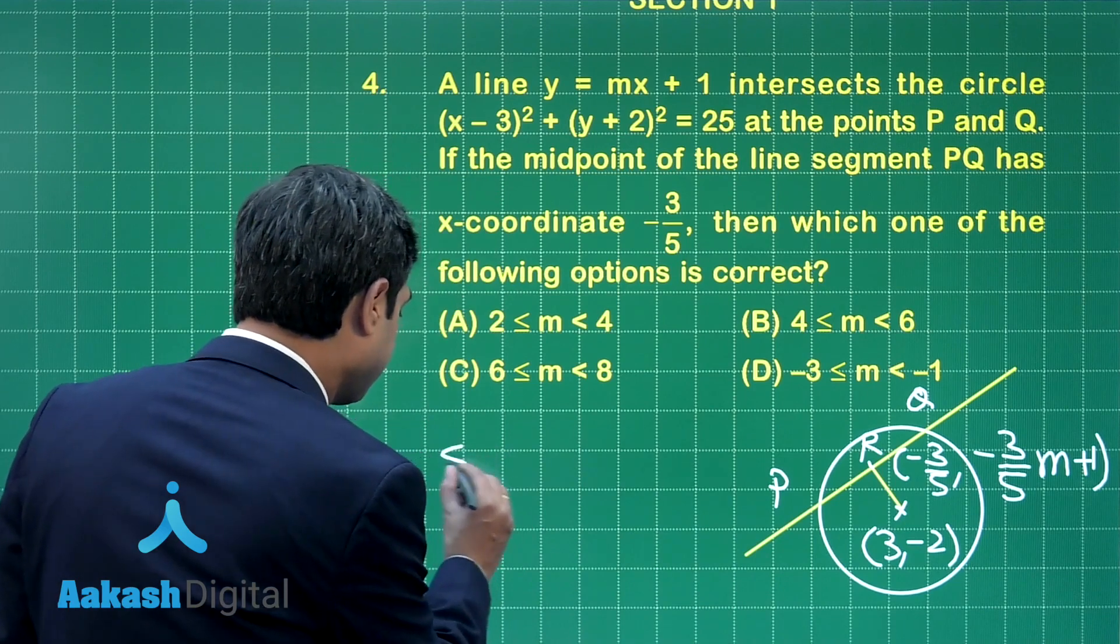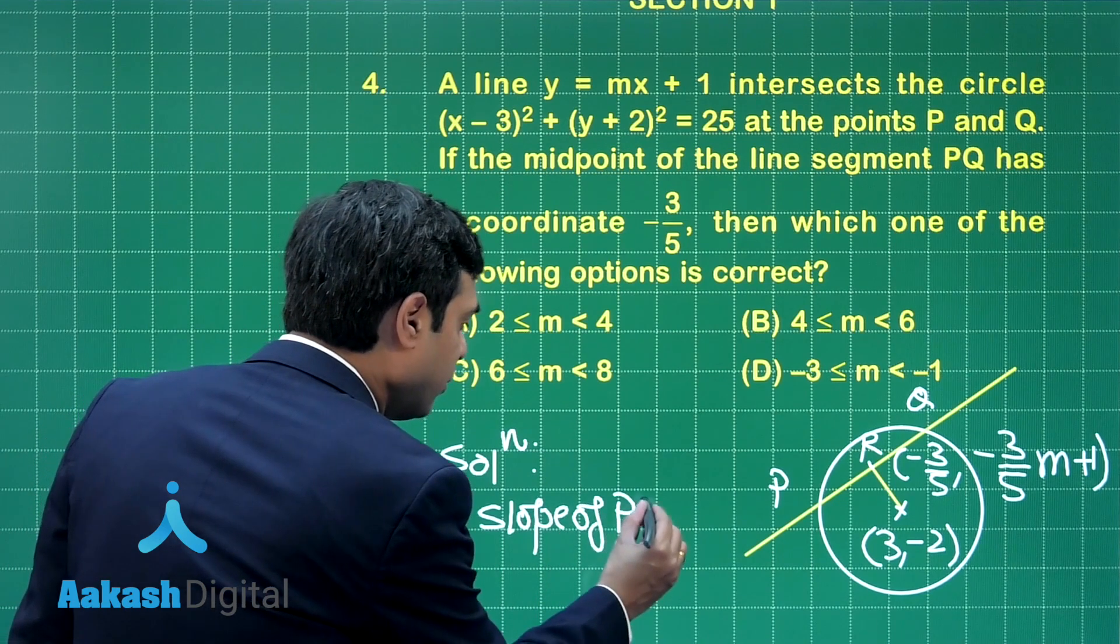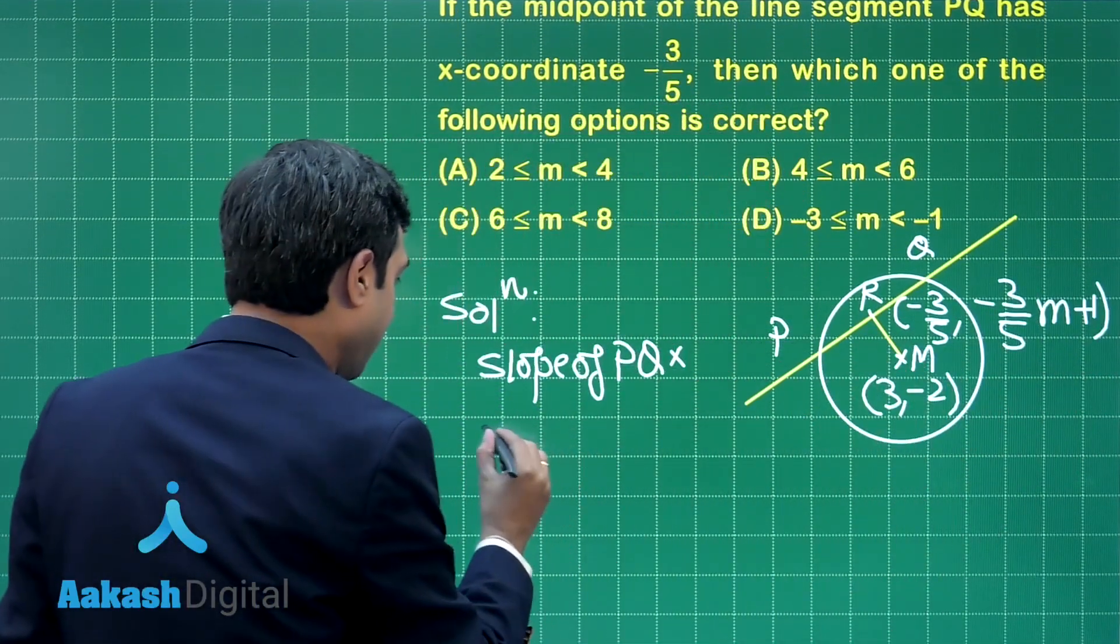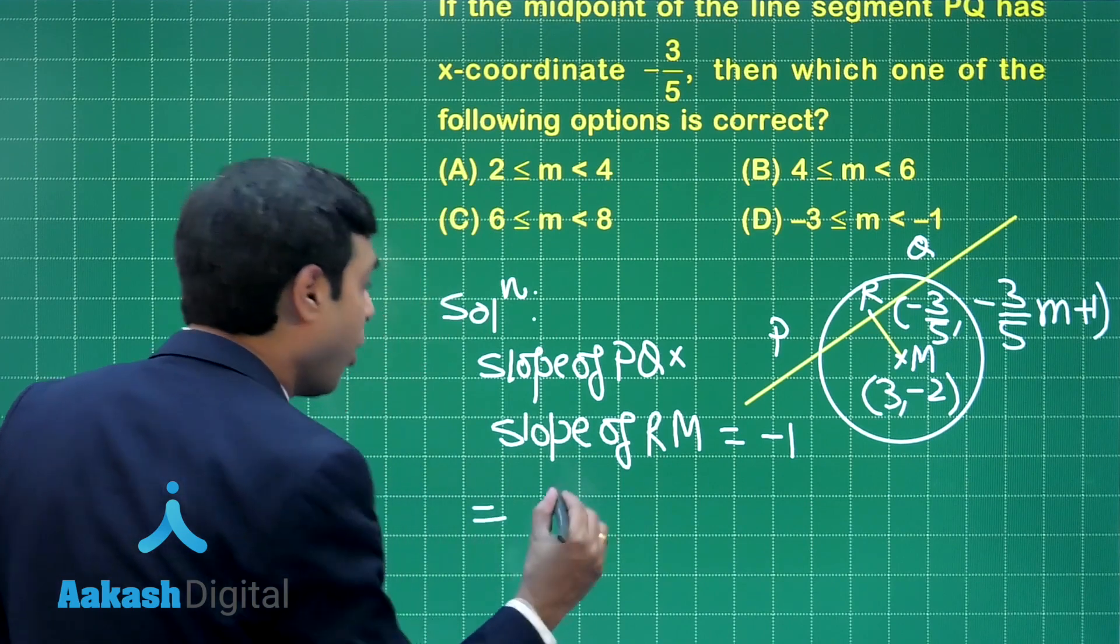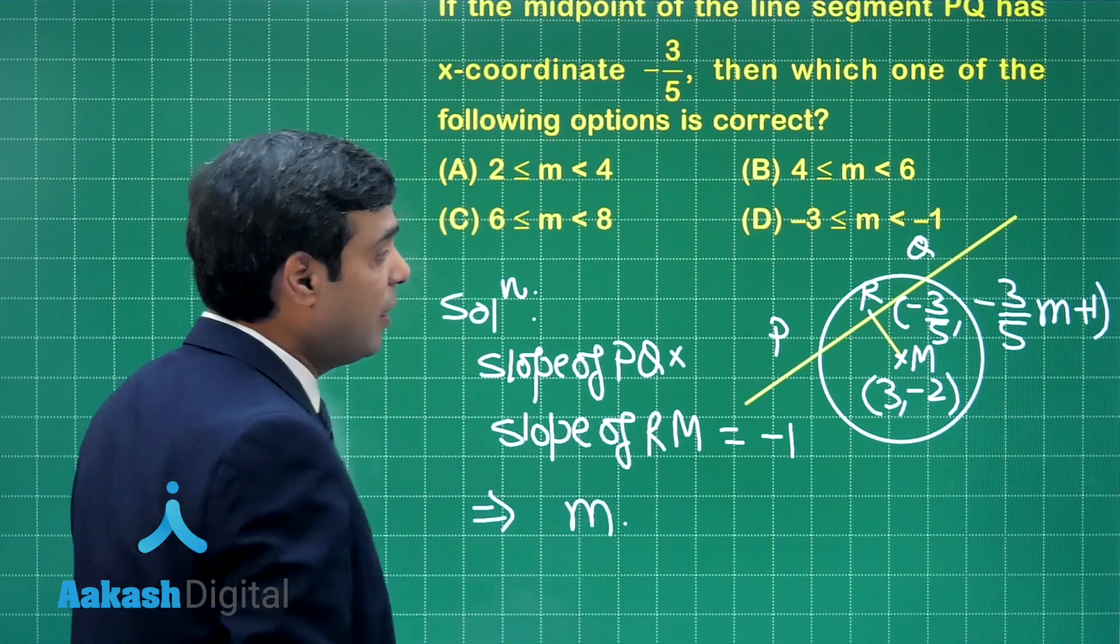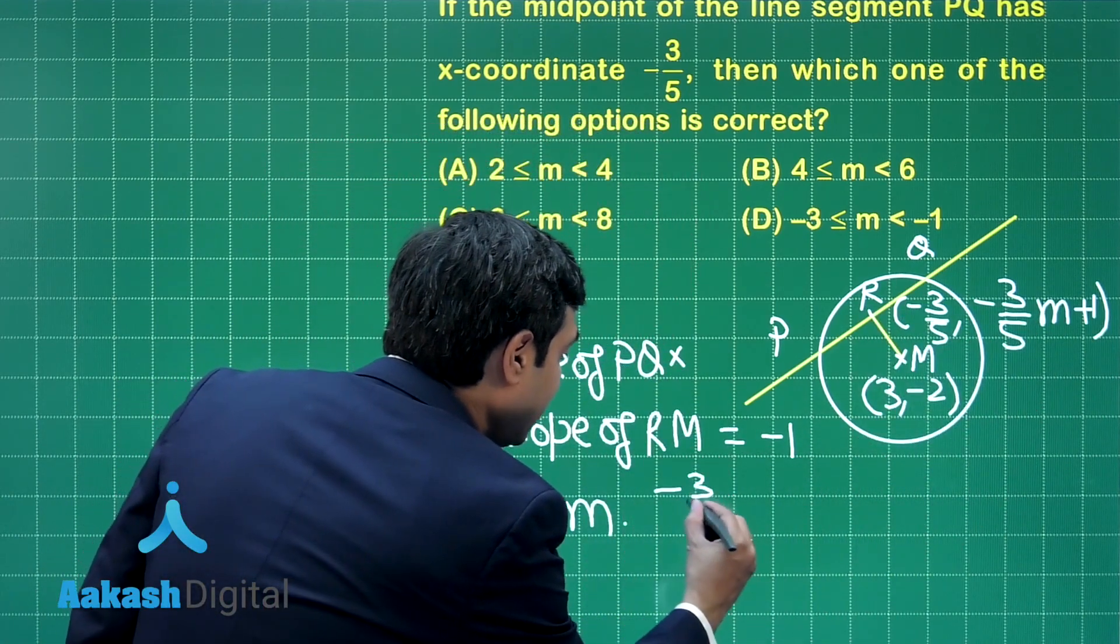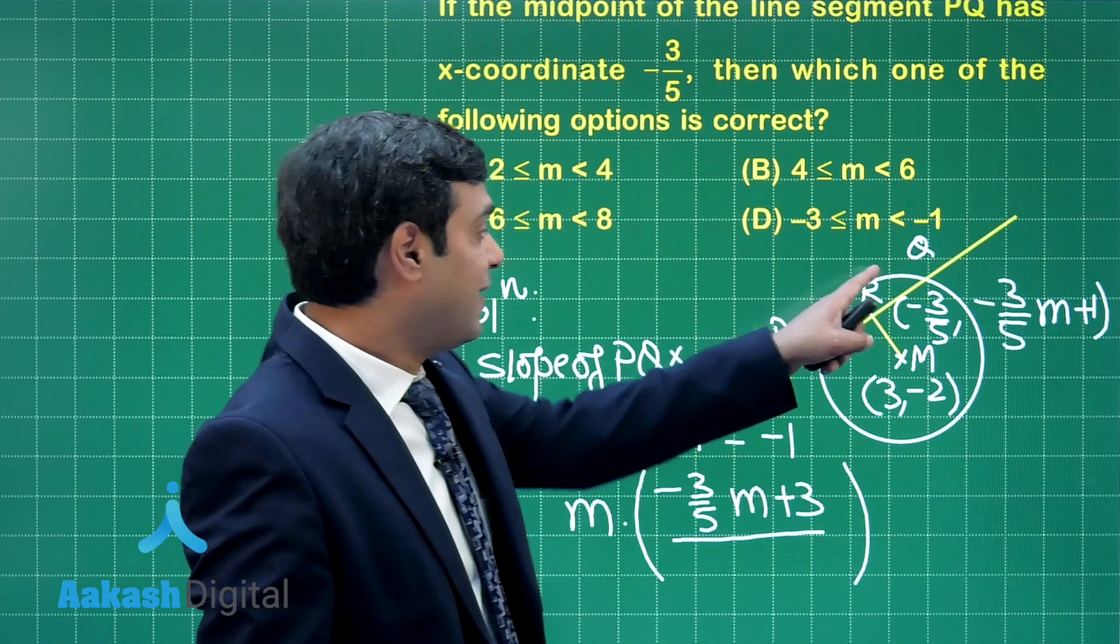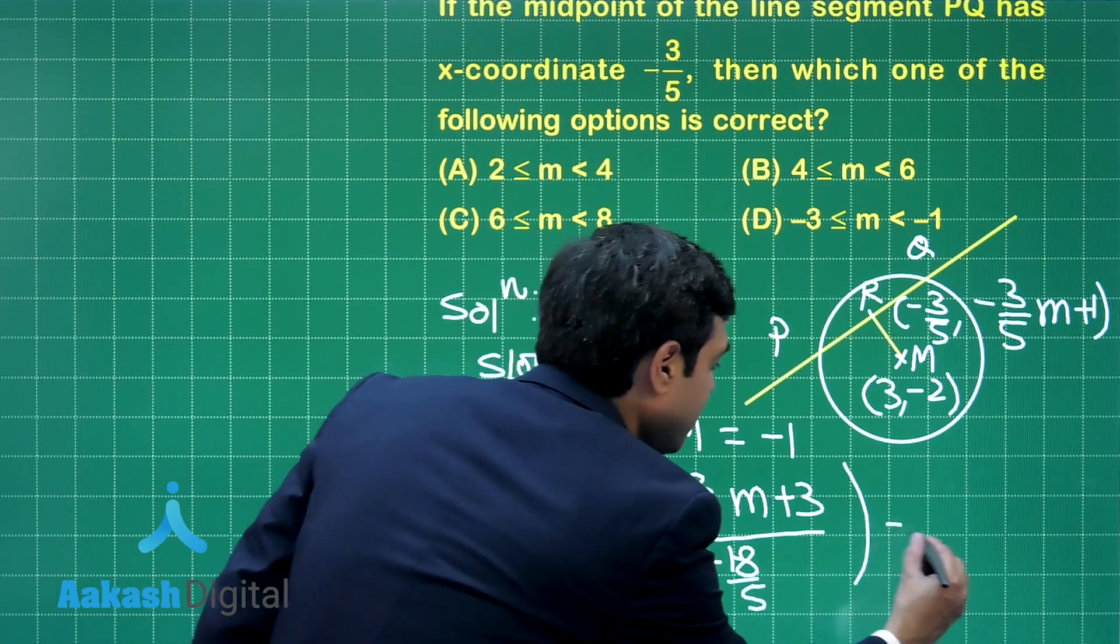So, let us start this question. Slope of PQ multiplied with slope of, say this is RM, is equal to minus 1. Now slope of PQ, this line its slope is m. This means m multiplied with slope of RM we can write minus 3 by 5 m plus 1 plus 2. So, it is minus 3 by 5 m plus 3 divided by denominator minus 3 by 5 minus 3. So, we can write here minus 18 by 5, this product equals minus 1.